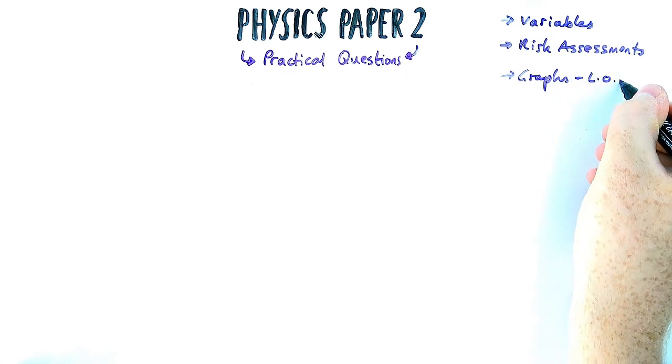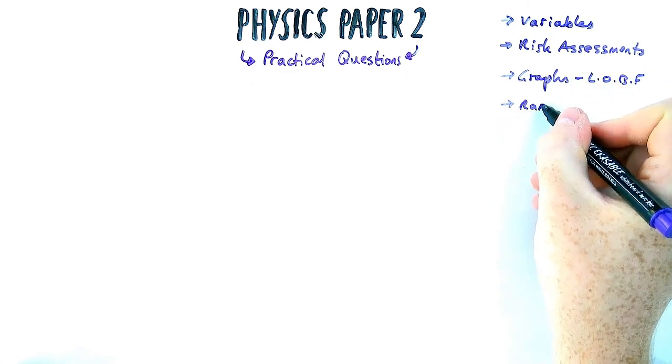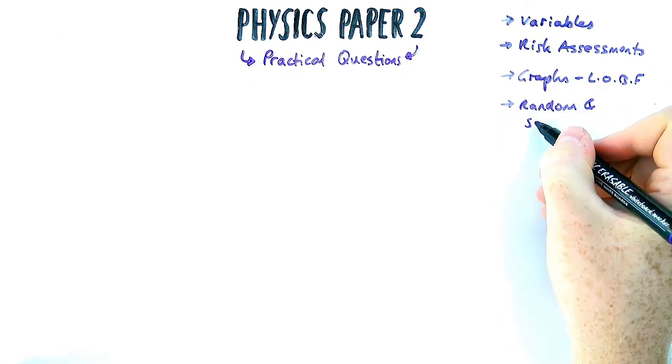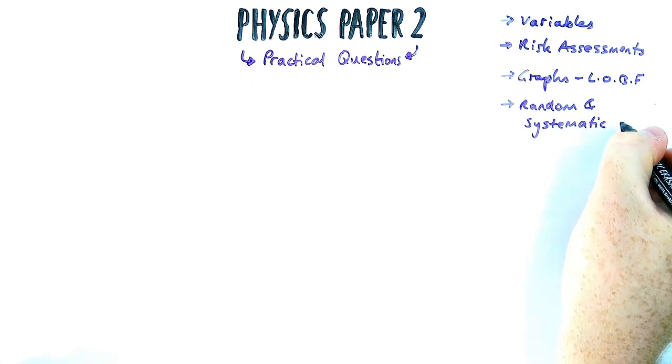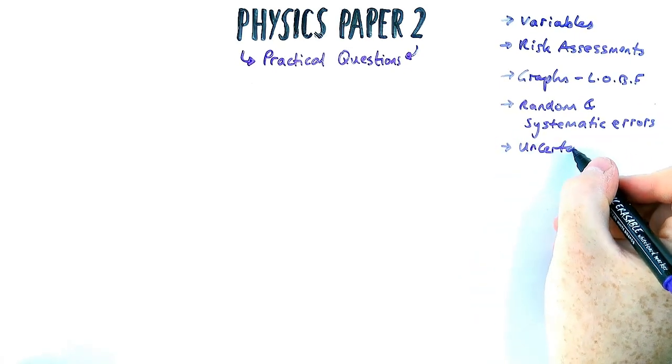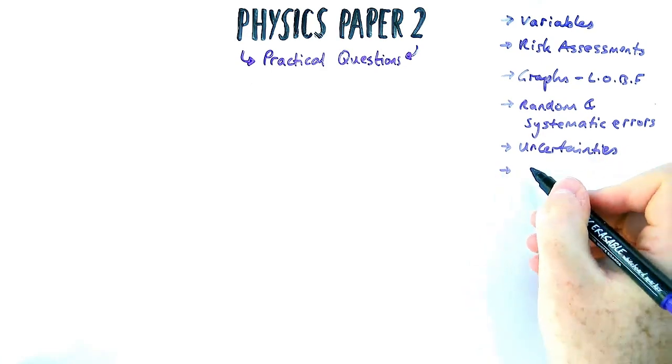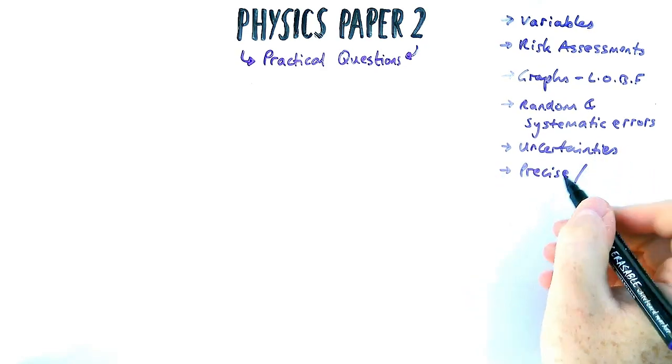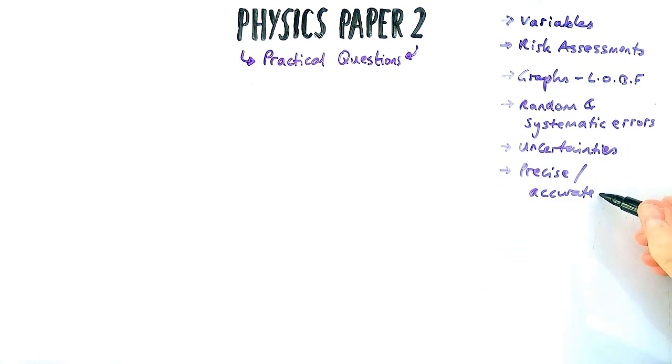So today we're going to look at a few exam questions to do with variables, how to write risk assessments, we're going to look at graphs, random and systematic errors which come up all the time, and then also look at how to calculate uncertainties and key terms like precise and accurate, what they mean and how to use them in your answers.